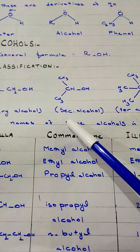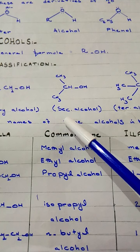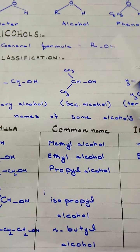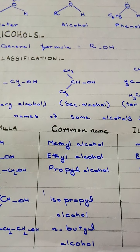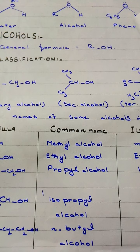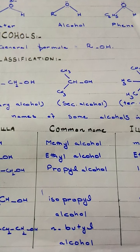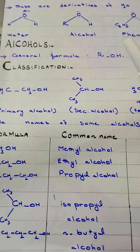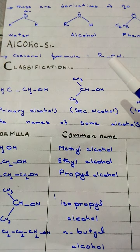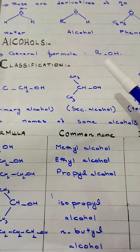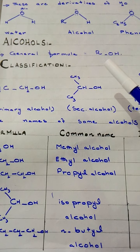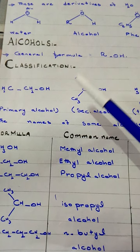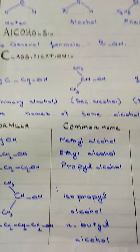Alcohols are also classified into monohydric and polyhydric alcohols. Monohydric alcohols contain one OH group, while polyhydric alcohols may contain two, three, or more OH groups and are named as dihydric, trihydric, and so on, on the basis of number of hydroxyl groups. Monohydric alcohols are further classified into primary, secondary, and tertiary alcohols.